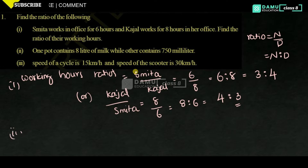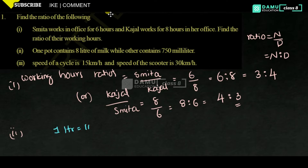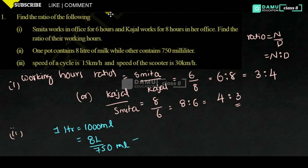The second one is: 1 pot contains 8 litres of milk while the other contains 750 millilitres. So, 1 litre is equal to 1000 millilitres. The first pot will be 8 litres, which is 8000 ml, and the second pot is 750 ml.